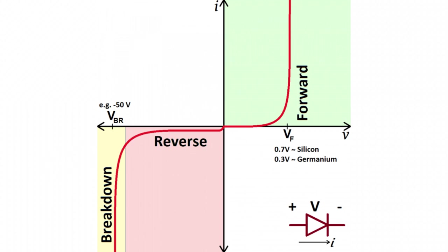This graph also shows us that the diode has something called a forward voltage. This is the bare minimum of positive voltage required for the diode to turn on and become a conductor.